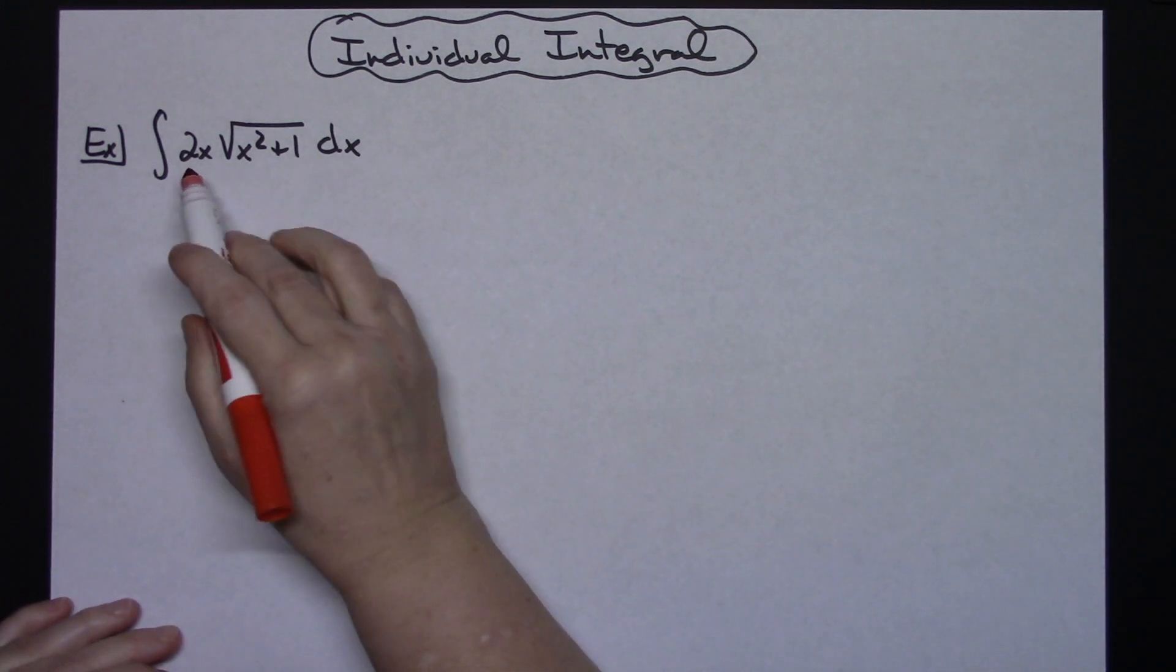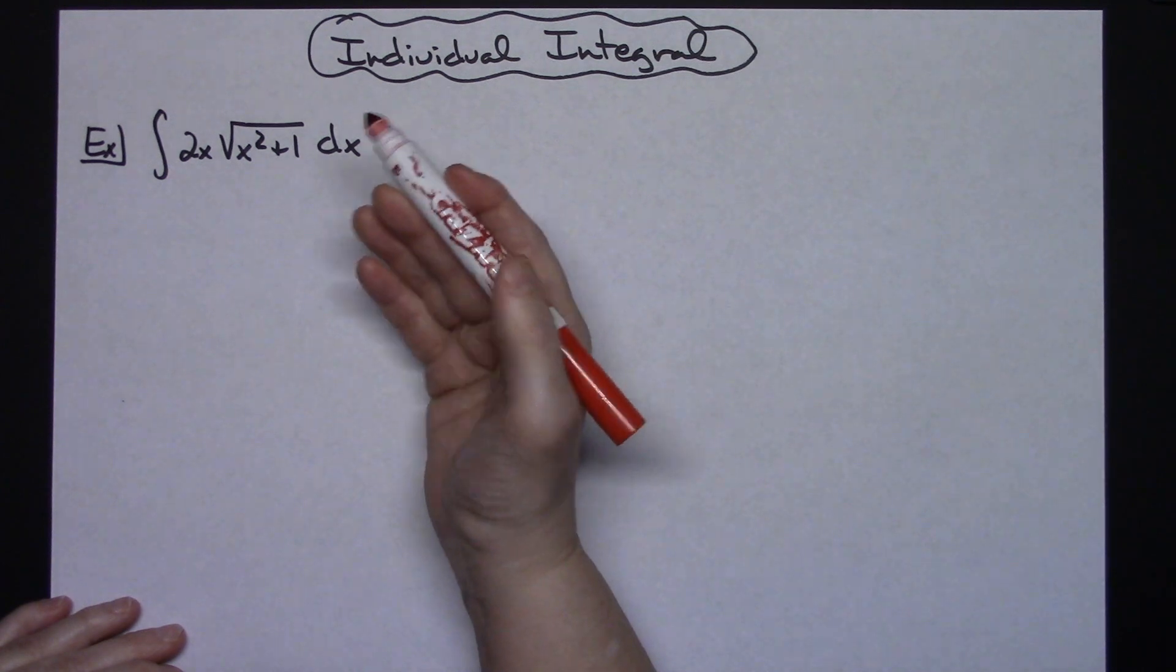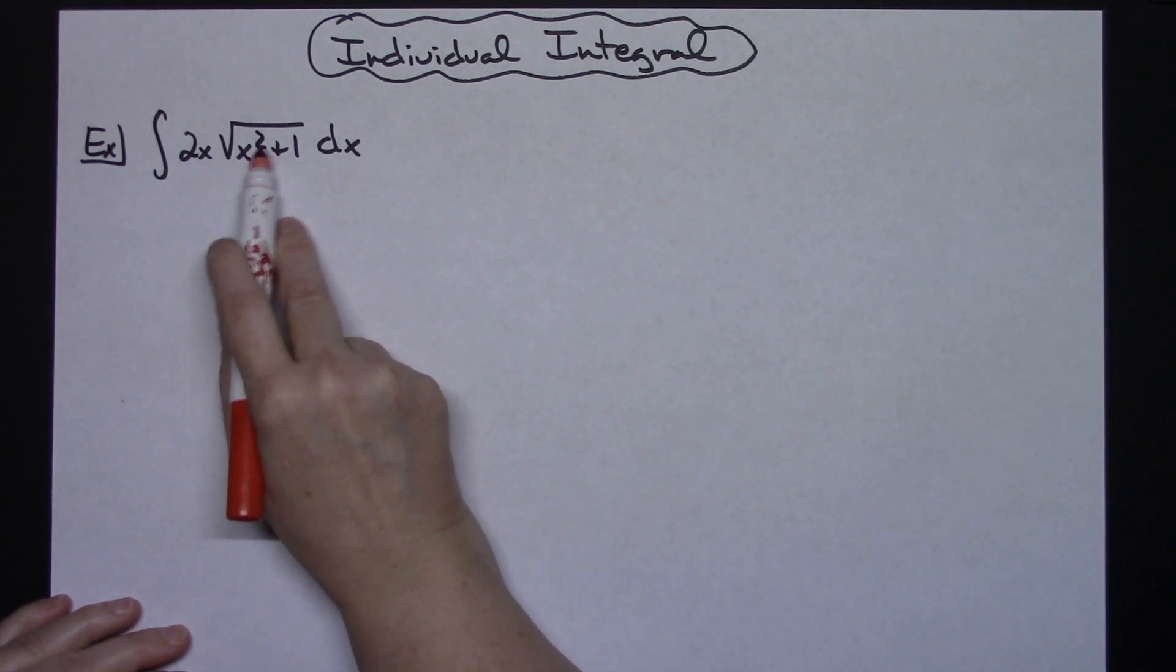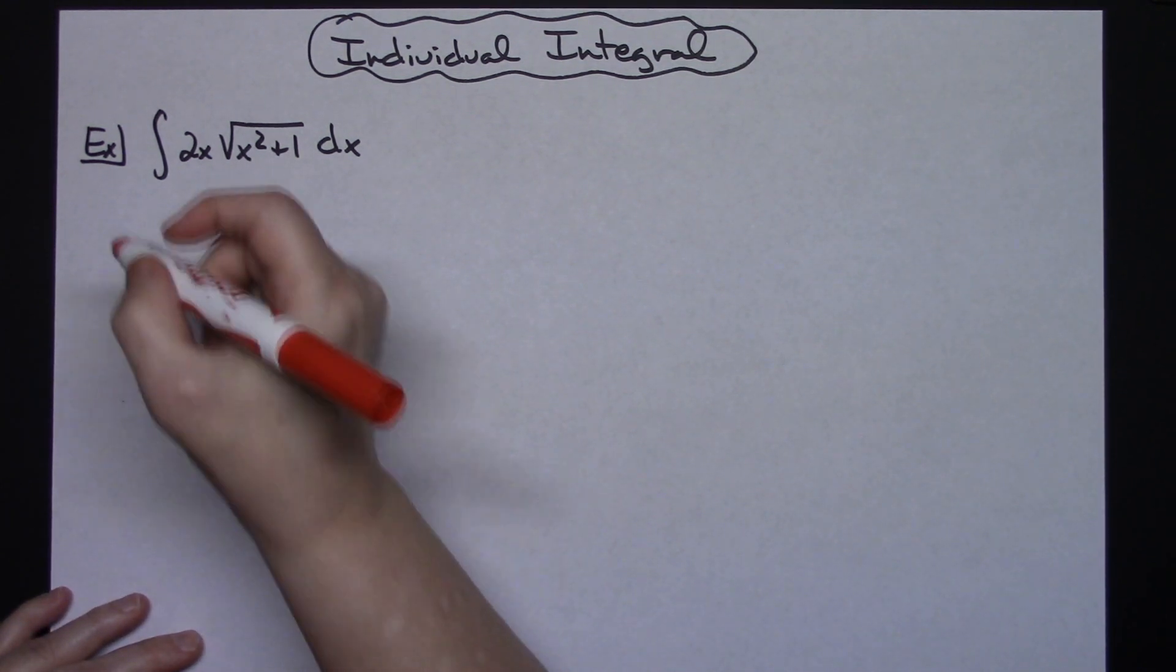Alright, so I'm going to take a look at my function here that I'm working with. I'm going to try to find the innermost part of the function. That's that x squared plus 1, and that's where I'm going to start with letting my u be whatever's on that inside.